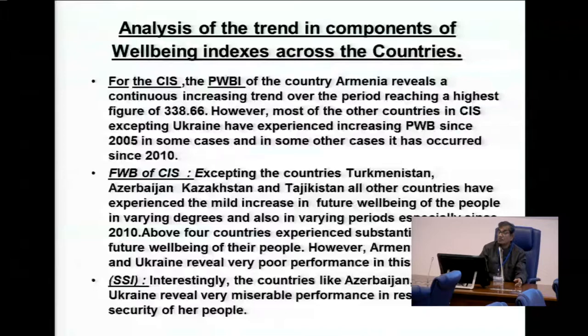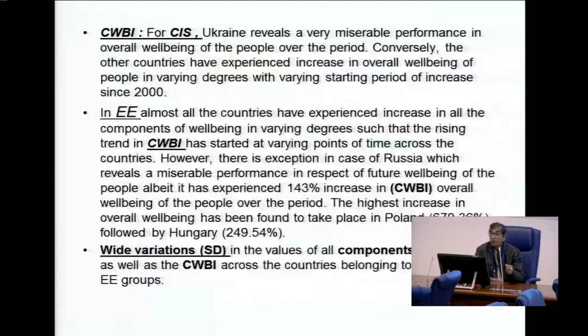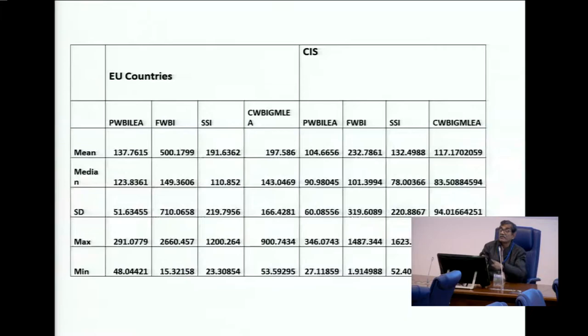Looking at the composite overall well-being of people in CIS countries, we can reveal very poor performance as per our results. In East European countries, almost all countries have experienced an increasing trend in well-being, with Poland having the higher increase followed by Hungary. However, we find wide cross-country variations in the levels of well-being, measured in terms of standard deviation, and the overall aggregate figures are in the table.